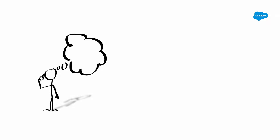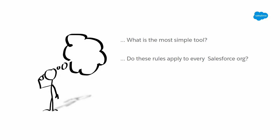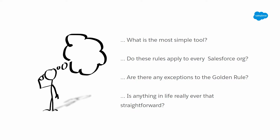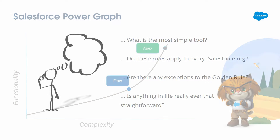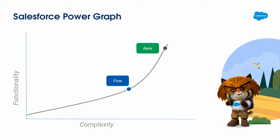As a developer, as an administrator, as an architect, we need to ask: what is the most simple tool? Does this rule apply to every Salesforce org, or may we have some exceptions? As you can see in this graph, the strong point of Flow versus Apex is its lower complexity. But Apex provides higher functionality.